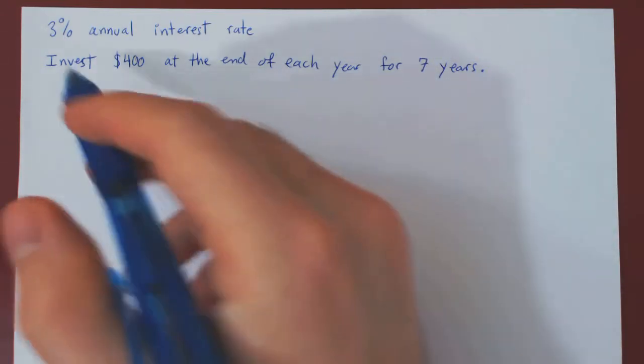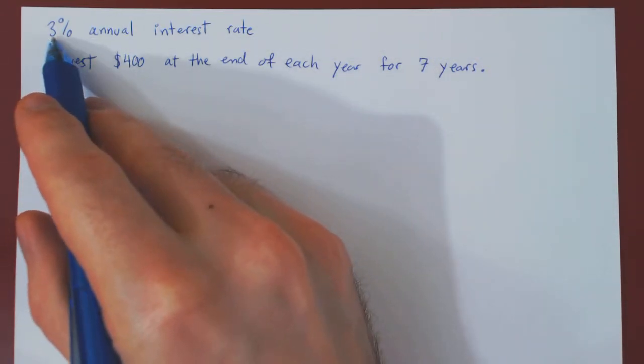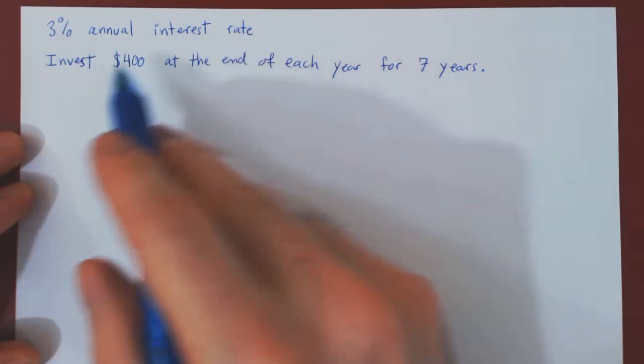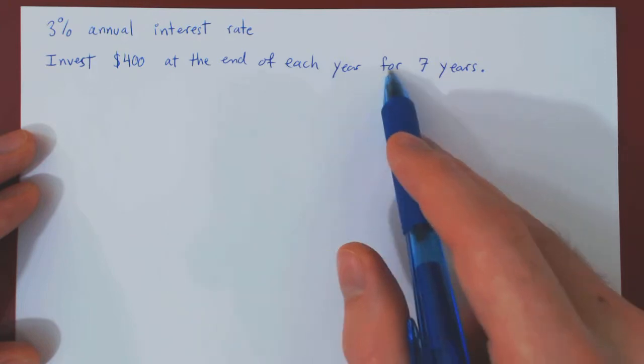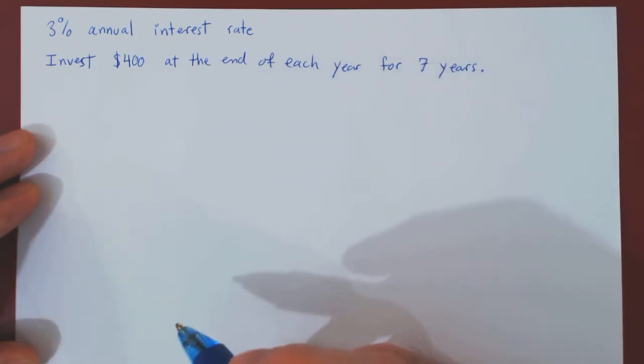Okay, so imagine the following situation. We have a 3% annual interest rate, and we decide to invest $400 at the end of each year for seven consecutive years.